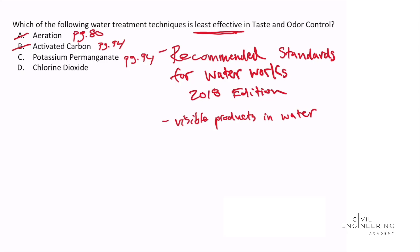I then search chlorine dioxide and find it on page 73 of the document. Chlorine dioxide is recommended as a water treatment technique to control taste and odor, so I cross that out as well.